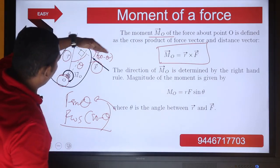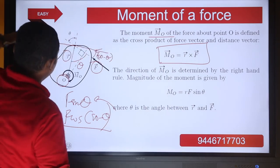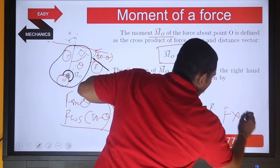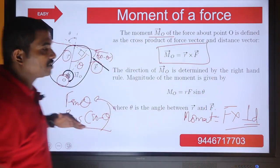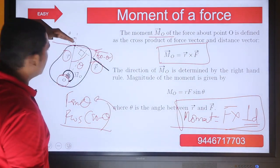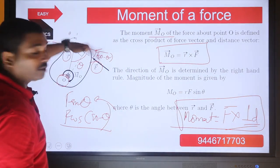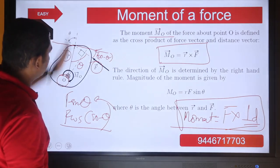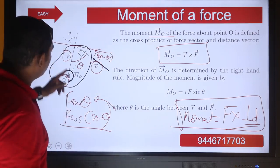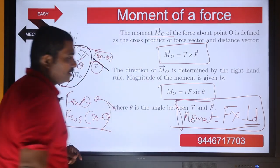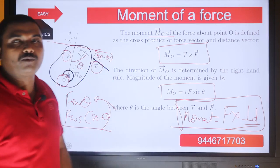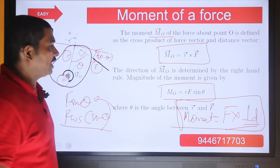I am going to resolve f along the perpendicular direction to the distance vector r. Because moment is equal to force into perpendicular distance. This force is inclined, so I make the force perpendicular to vector r. When I resolve the force f along the perpendicular direction, it becomes f sin theta. So M0 equals r into f sin theta, where r is the distance and f sin theta is the resultant component of force f along the perpendicular direction of r.